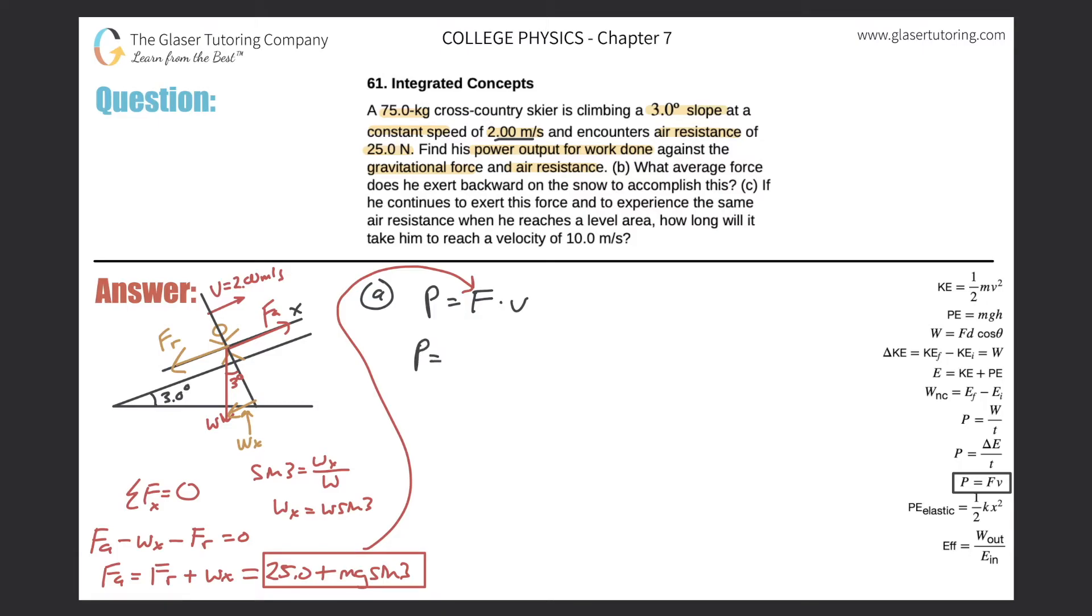So we've got power now is equal to the force. And the force we just detailed down here. It's going to be 25.0 plus the mass 75.0 times gravity of 9.80 times then the sine of three. Okay, close brackets, then multiplied by the velocity now of two meters per second.